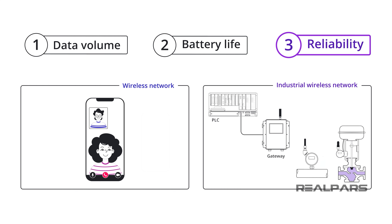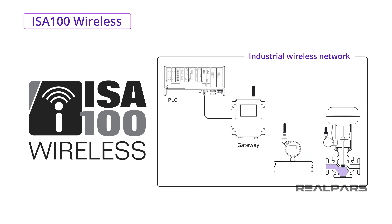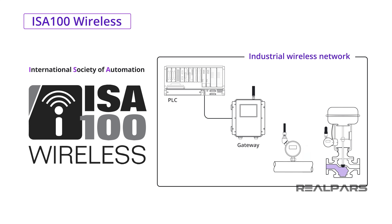In a typical wireless network, it is okay for the data to be interrupted sometimes, but this is not acceptable in an industrial wireless network — here, the reliability and accuracy of the data are critical. One of the most reliable and accurate industrial wireless protocols you can use to build your industrial wireless network is ISA100 Wireless. This protocol is developed and maintained by the International Society of Automation, or ISA, which is the organization responsible for developing standards and certifications for the industrial automation industry worldwide.